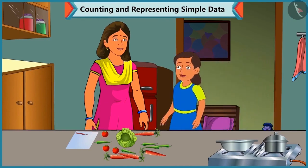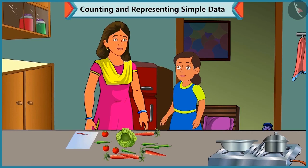Bubbly asks her mummy what she is doing. Mummy explains she is checking which vegetables are left and how many. Bubbly offers to help, and Mummy welcomes her. Mummy explains: first we group the vegetables, then we count them, and then we write their numbers.